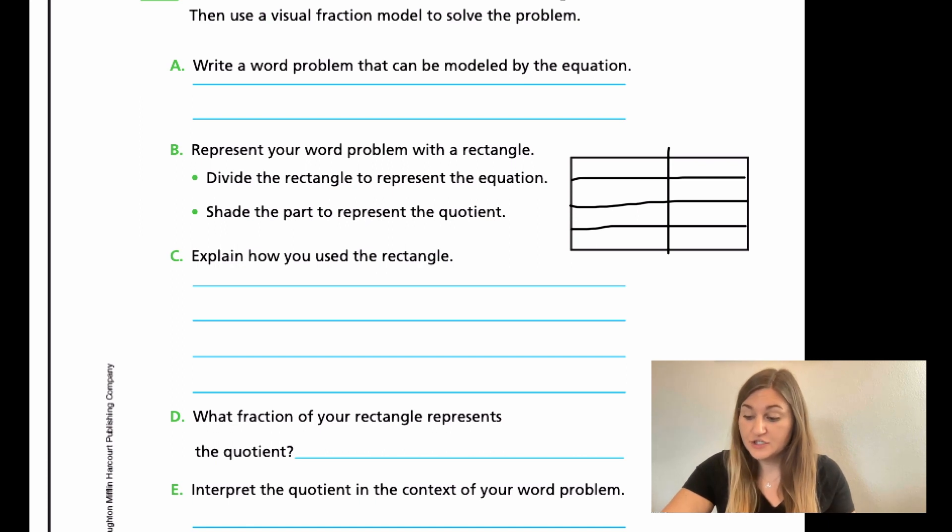And then, for the second bullet point, it says shade the part to represent the quotient. The quotient is how much each family member gets out of the total amount of pizza. It would be one of the eight. So, if I was part of the family member, I would be eating one-eighth of the total pizza.